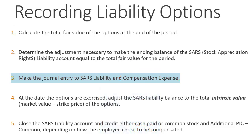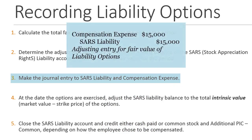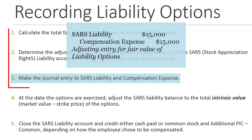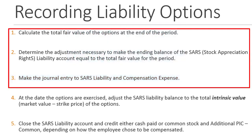Once I know the desired ending balance, in step 3 I make a journal entry to get from the current balance to the desired balance. I make that debit or credit to the SARs liability, and the flip side is compensation expense. If I have to increase the liability I increase compensation expense; if the market value has gone down I get to decrease the current year's compensation expense. I repeat these steps every period while the options vest and until they exercise.